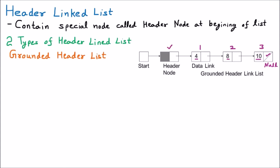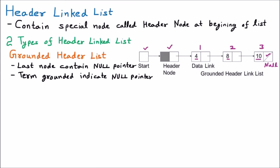This is a header link list, so the first node is the header node. This header node does not contain any meaningful information — it is just the header node. Our start pointer always points to the header node, and afterward it points to the first, second, third node and so on. The key property of the grounded header list is that the last node always points to null — the term 'grounded' indicates the null pointer.